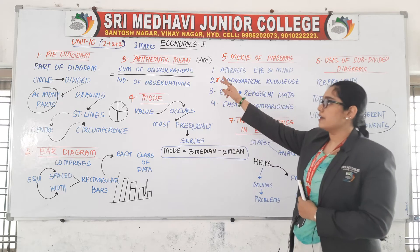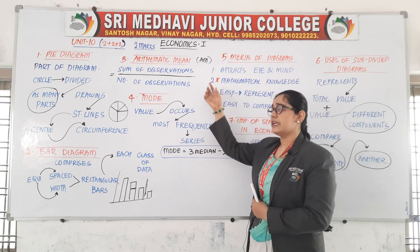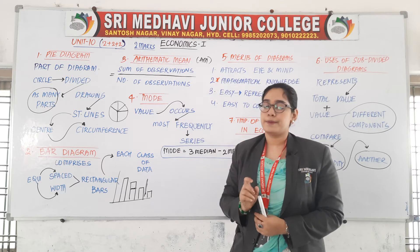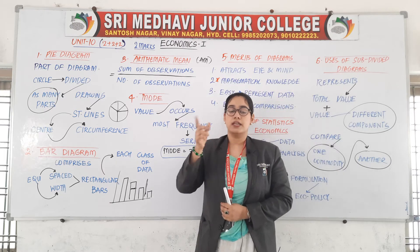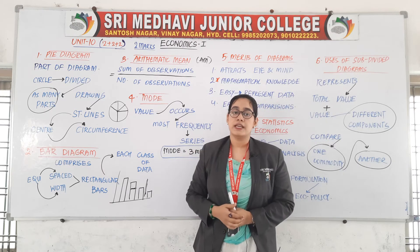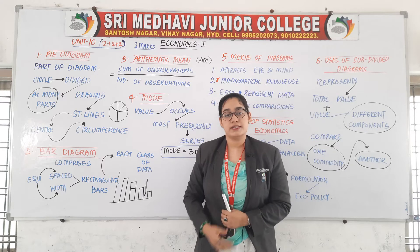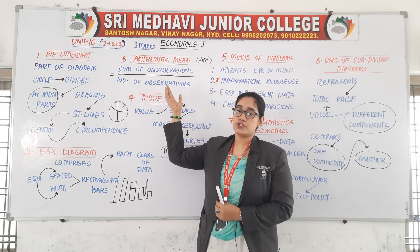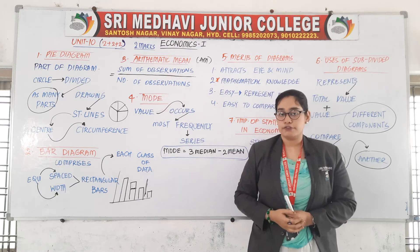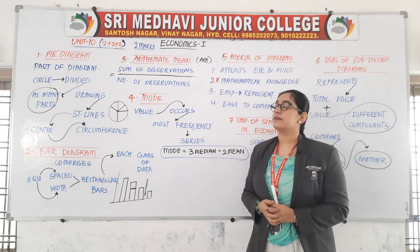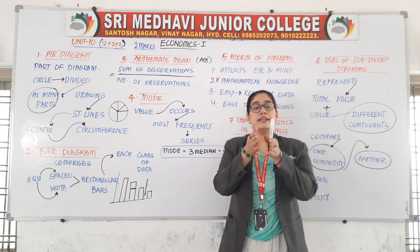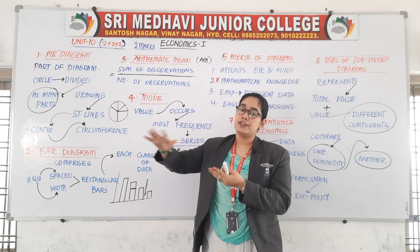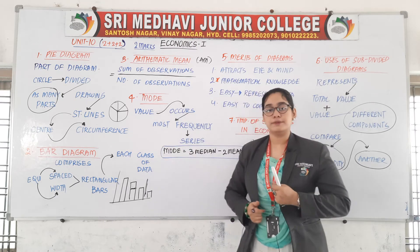The next concept is arithmetic mean, also called AM. How do we find the arithmetic mean? It is nothing but the sum of observations divided by the number of observations.